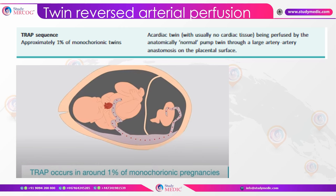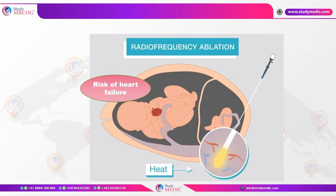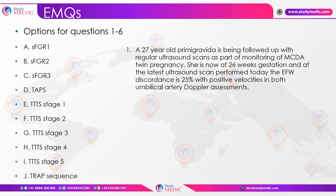Twin reversed arterial perfusion (TRAP) has a low incidence of about 1% of monochorionic twins. There is an acardiac twin with no cardiac tissue, and an anatomically normal pump twin that perfuses the acardiac twin through a large artery-to-artery anastomosis on the placental surface. The pump twin is at risk of heart failure. Treatment involves radiofrequency ablation of this artery-to-artery anastomosis to save the normal twin.